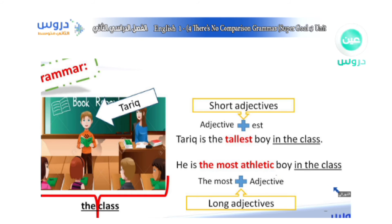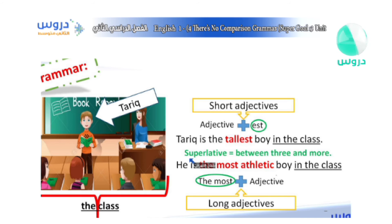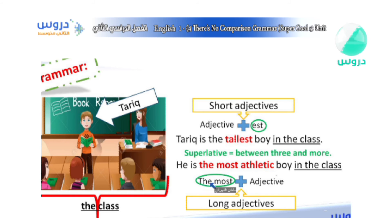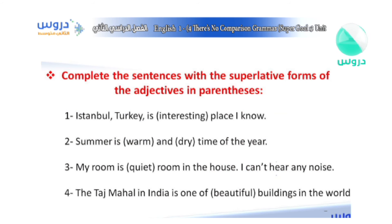When comparing three or more, we call it the superlative. Short adjective: add -est. Long adjective: use 'the most.' The spelling rules are the same as comparative: if the adjective ends in Y with a consonant before it, change Y to I then add -est; if there's a single vowel before a final consonant, double the consonant then add -est. But this time we use -est instead of -er.